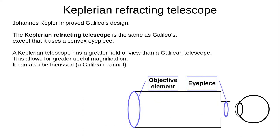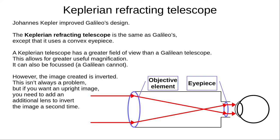Johannes Kepler improved Galileo's design by replacing the concave eyepiece with a convex one. This allows for a greater field of view and greater magnification. Unlike the Galilean telescope, a Keplerian refracting telescope also allows the focus to be adjusted. However, as you can see here, the light rays cross over, producing an inverted image. This isn't always a problem, but if you want an upright image you'll need an additional lens.